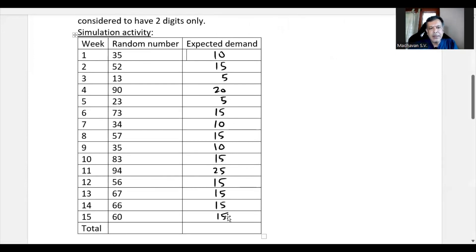Now, let us add this. When we add we get 195. Therefore, the average expected demand will be the total which is 195 divided by number of weeks that we will get 13 per week. That is the solution for this.